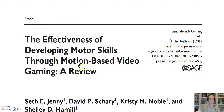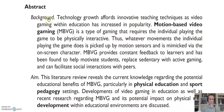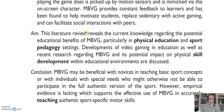Here is an example of a literature review which I co-wrote with a few other authors in the Journal of Simulation and Gaming: 'The Effectiveness of Developing Motor Skills Through Motion-Based Video Gaming: A Review.' This particular journal required us to separate out with subheadings the abstract and the aim. So this is more of an introduction to what is motion-based video gaming. The aim of the literature review reveals the current knowledge regarding the potential educational benefits of motion-based video gaming (MBVG), particularly in physical education and sport pedagogy settings, developments of video gaming and education, as well as recent research regarding motion-based video gaming and its potential impact on physical skill development within educational environments.